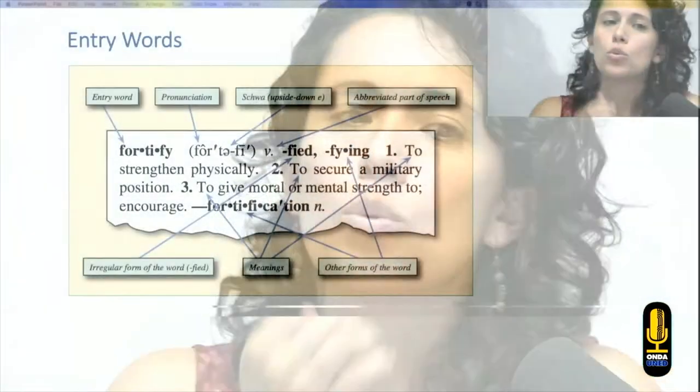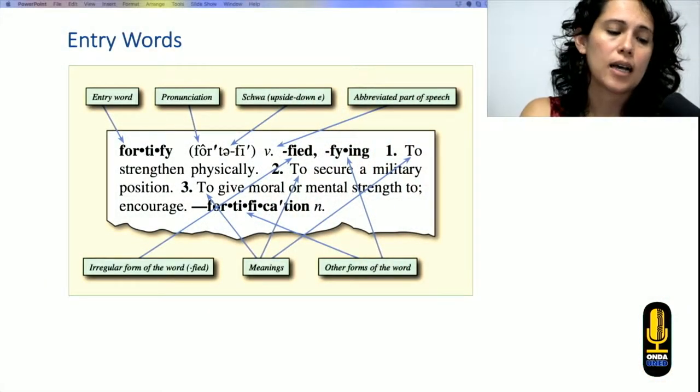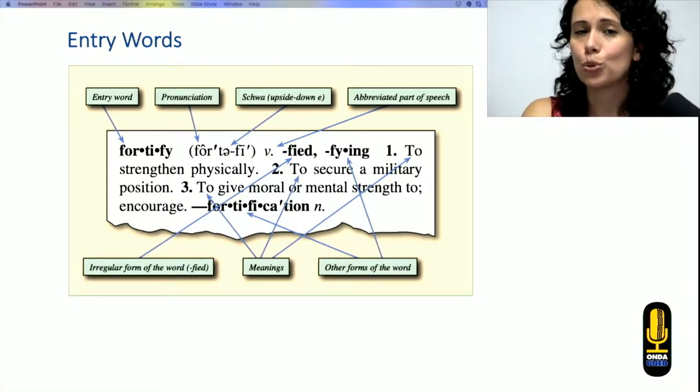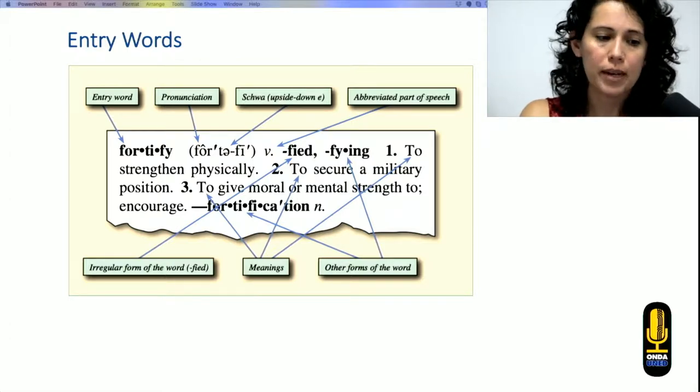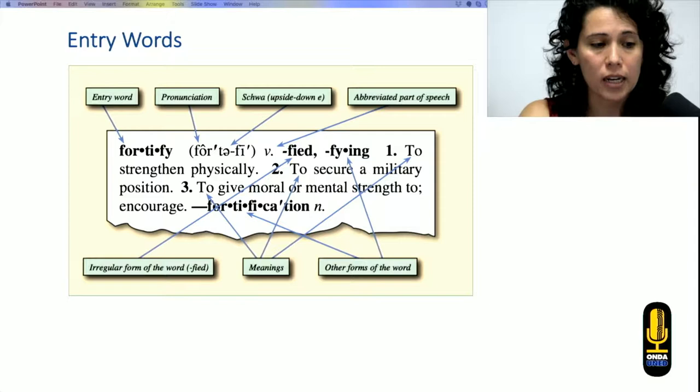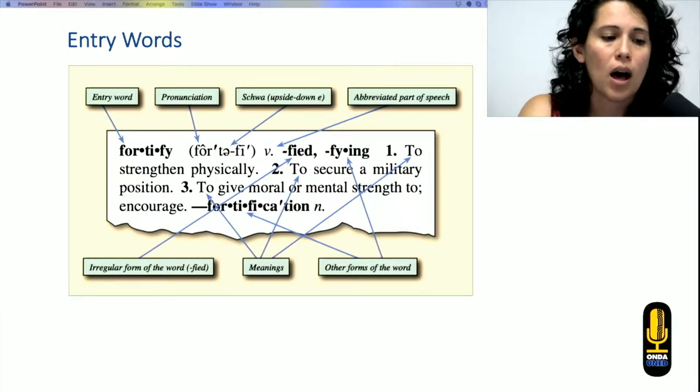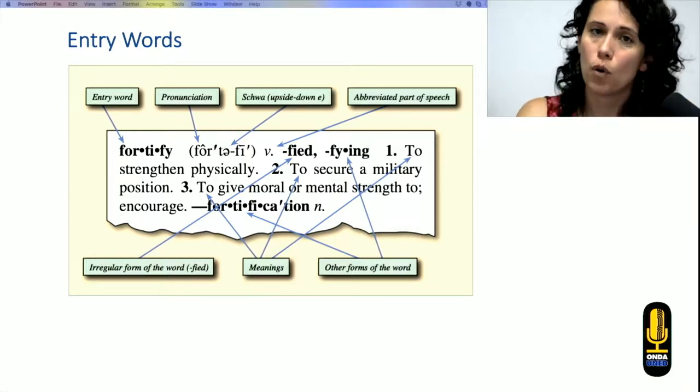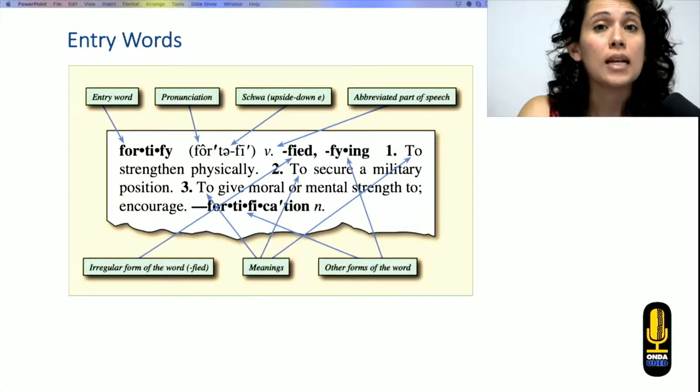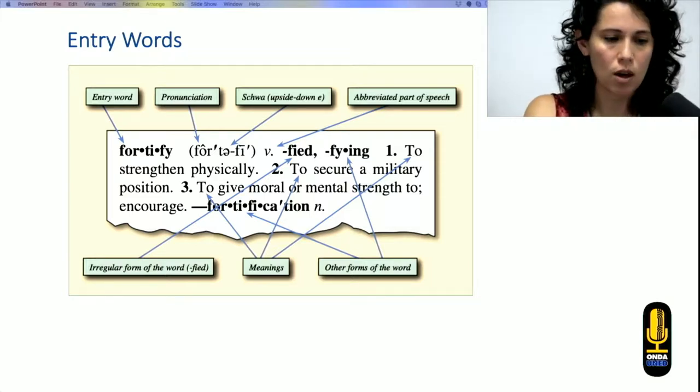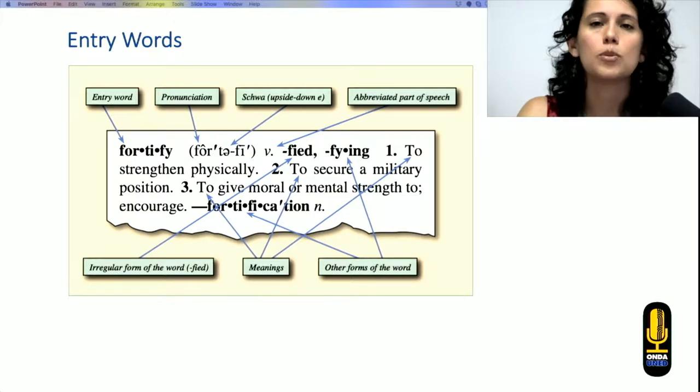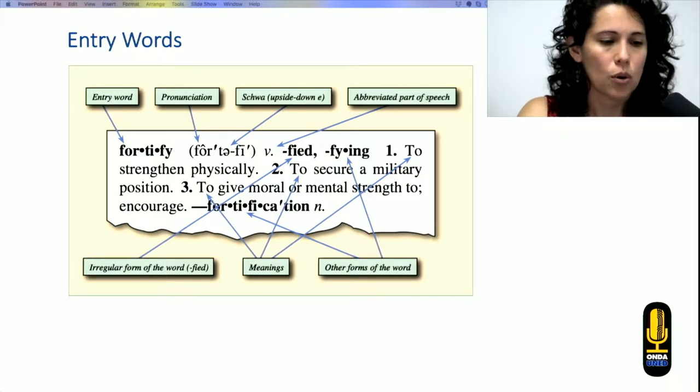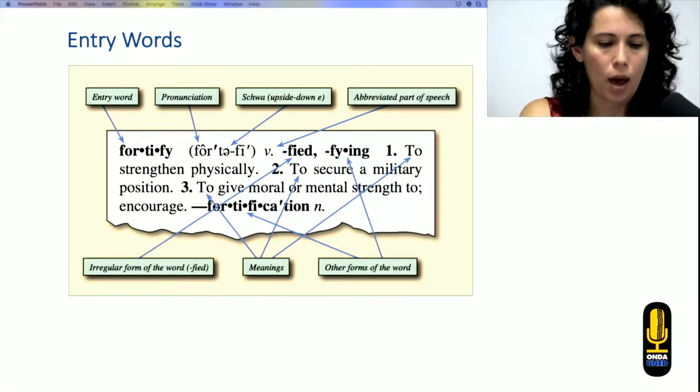Well, first of all, we need to understand that every single word in a dictionary is called an entry word. And after the entry word, you will find different information that will be very helpful. You can find the pronunciation in between parentheses, the part of speech. If there are other forms of the word, the different meanings, because you can find, as you see on the screen, you can see one, two, and three. One word can have three different definitions. So let's see how it works.